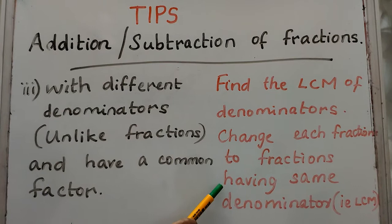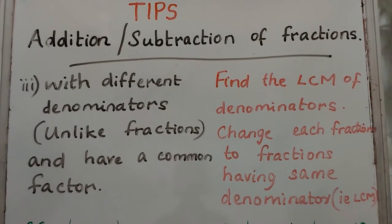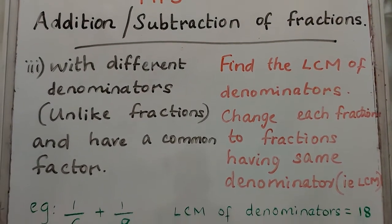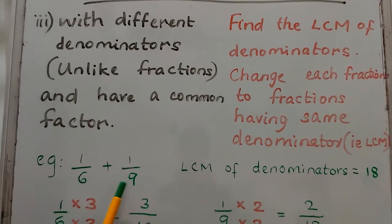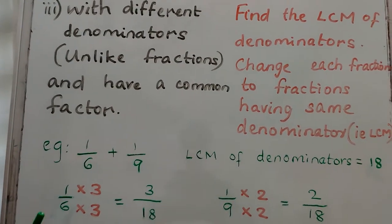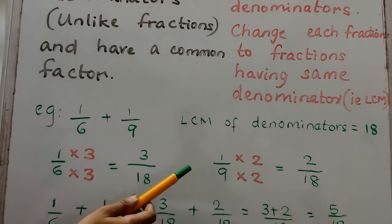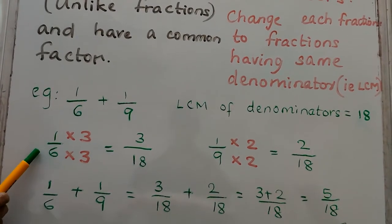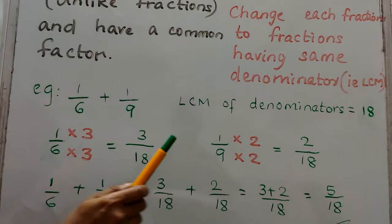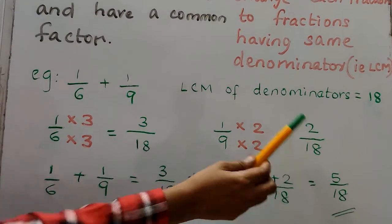For unlike fractions with a common factor, find the LCM of denominators. Example: 1 by 6 plus 1 by 9, LCM of denominators is 18. Change each fraction to have denominator 18: 1 by 6 is 3 by 18, 1 by 9 is 2 by 18.